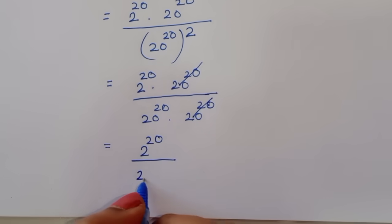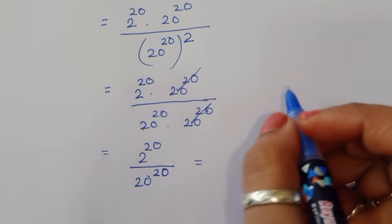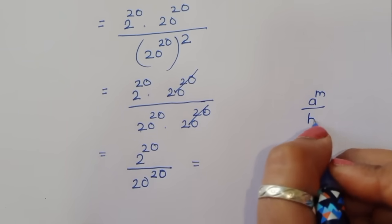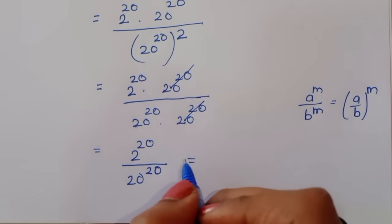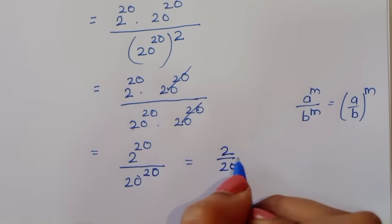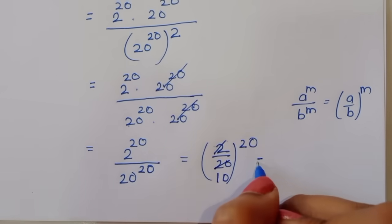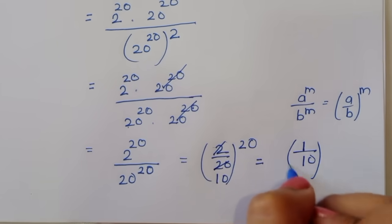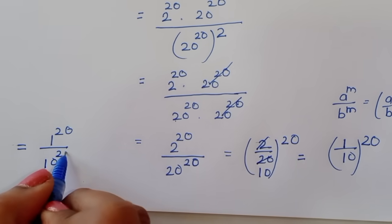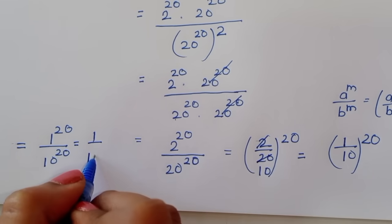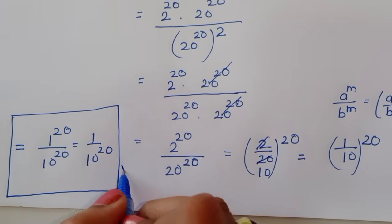Using the same formula — a power m divided by b power m equals (a/b) power m — we get (2/20) to the power 20. Since 2/20 simplifies to 1/10, the answer is 1 upon 10 power 20. We get the same value in both the first method and the second method. Thank you.